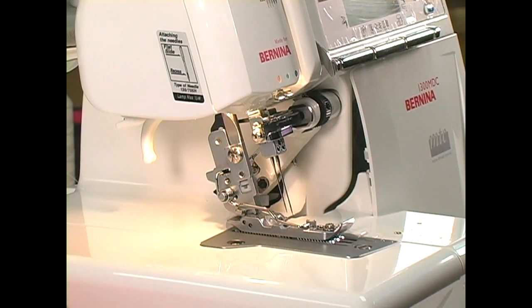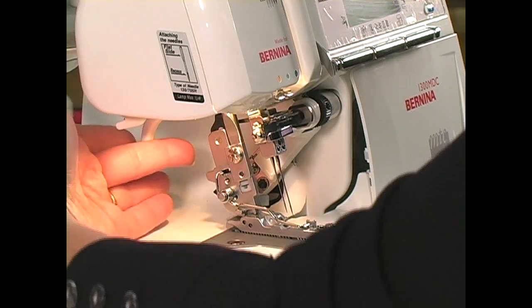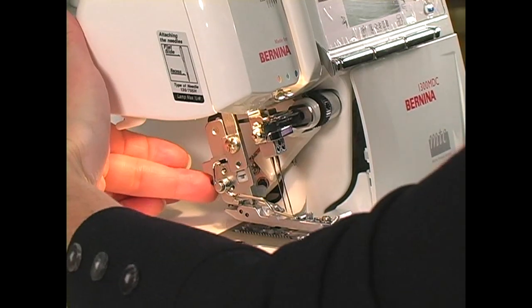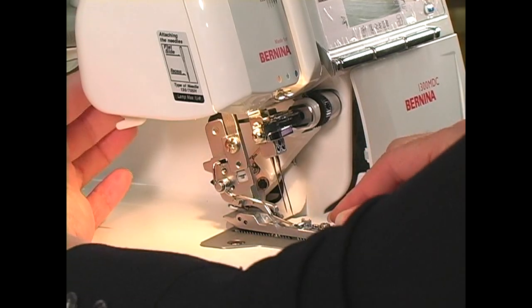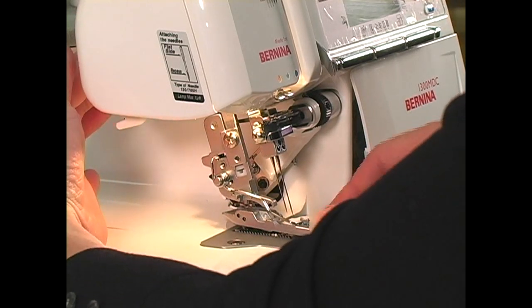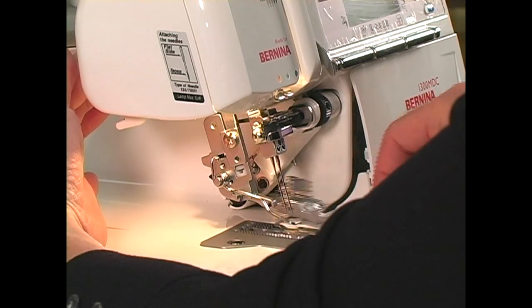To remove the presser foot from your overlock, lift the presser foot lever, press the catch, and you may wish to raise the presser foot lever for additional lift for ease in removing the foot.